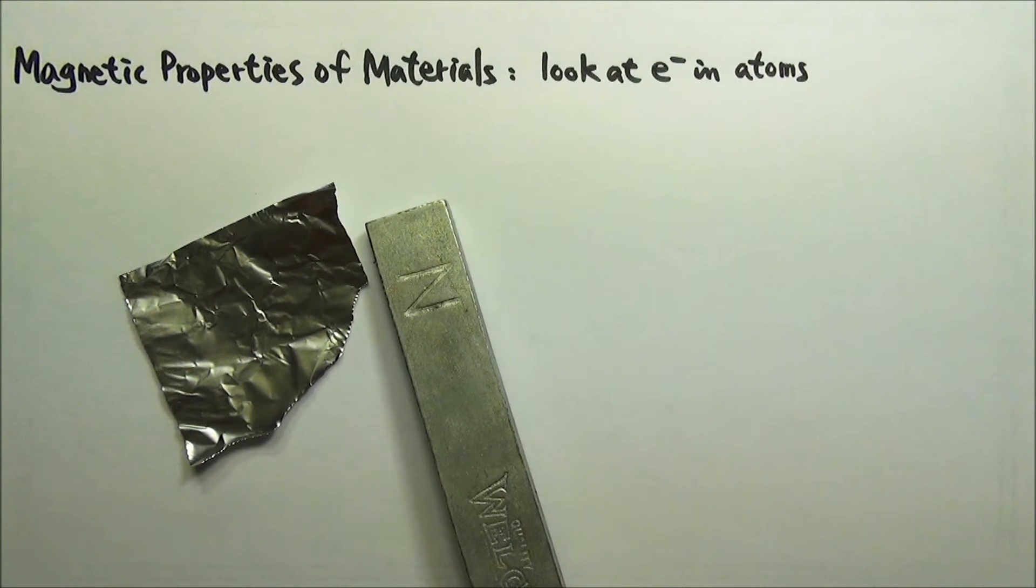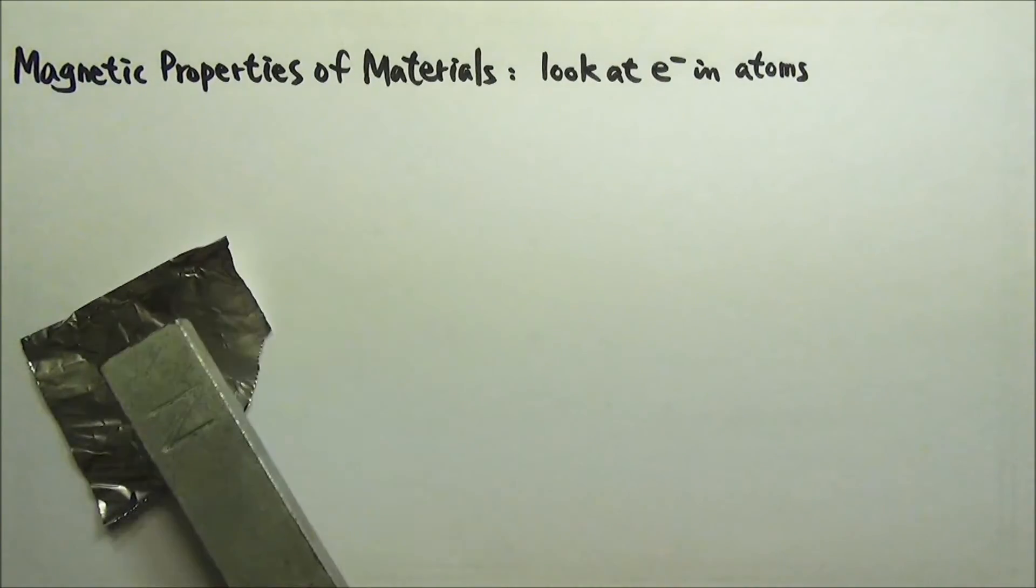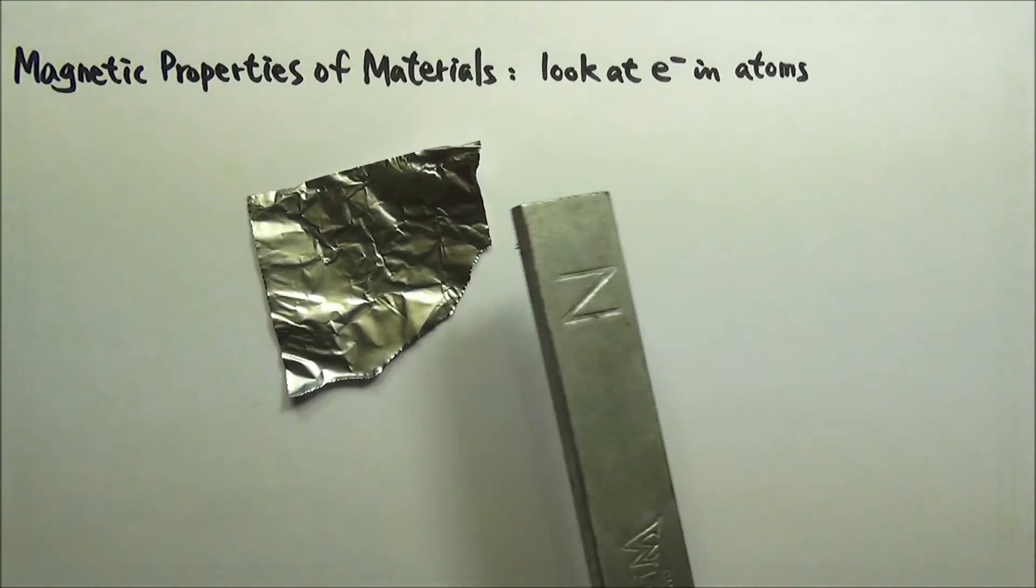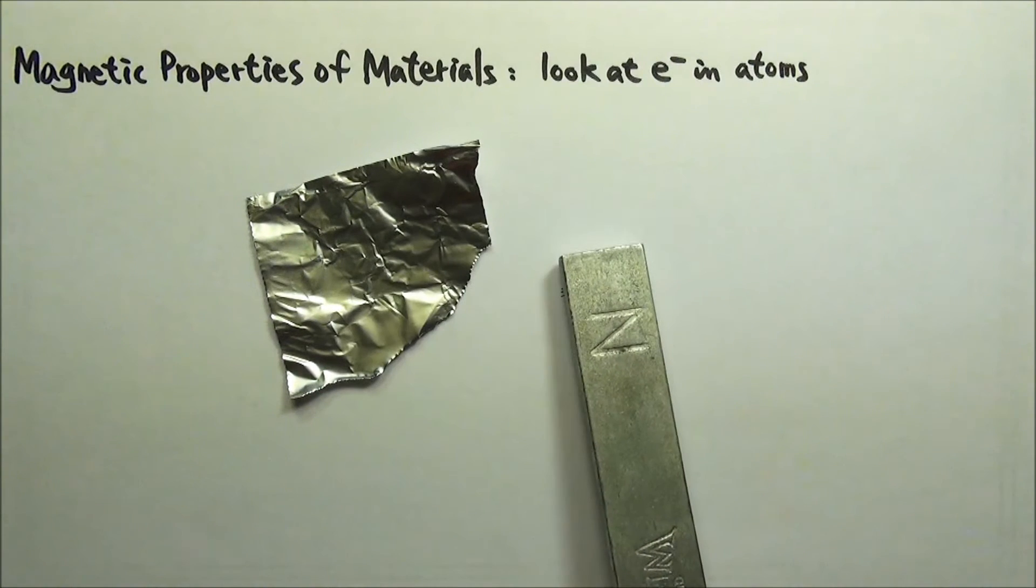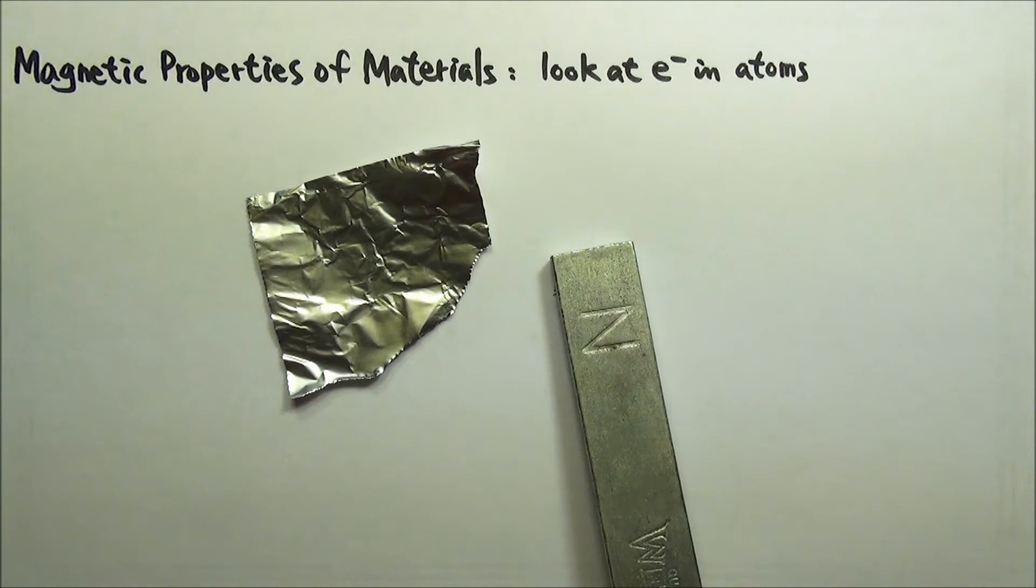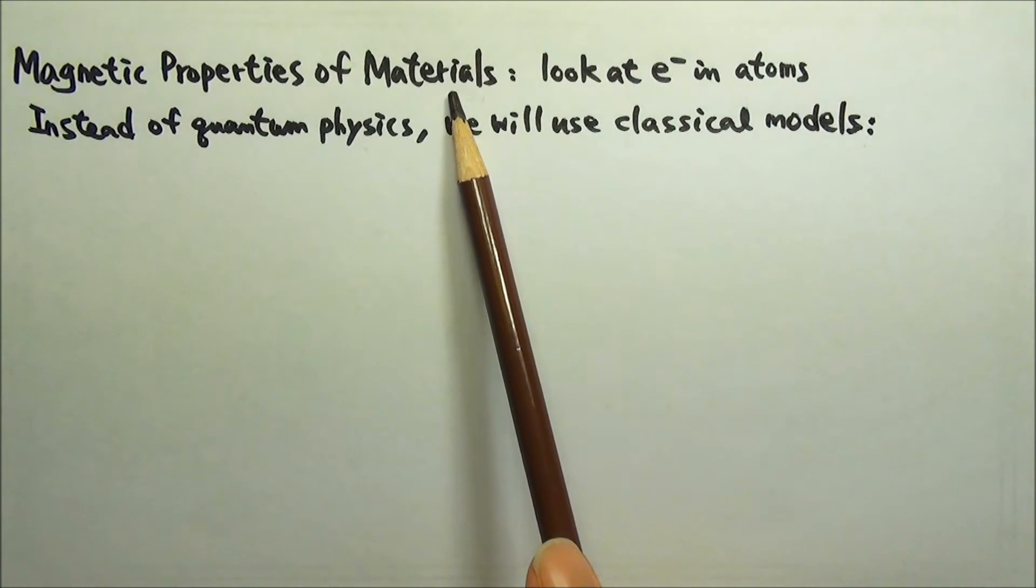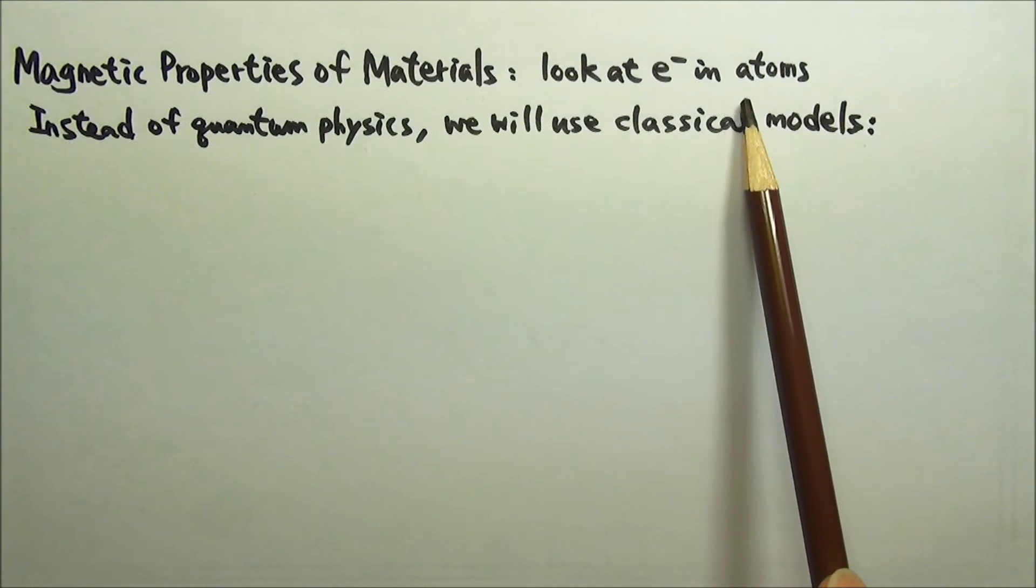Even though from our daily experience we know materials such as aluminum are neither attracted nor repelled by a magnet, it turns out that all materials have magnetic properties that can be affected by external magnetic fields. To understand the magnetic properties of materials, we have to look at electrons in atoms.